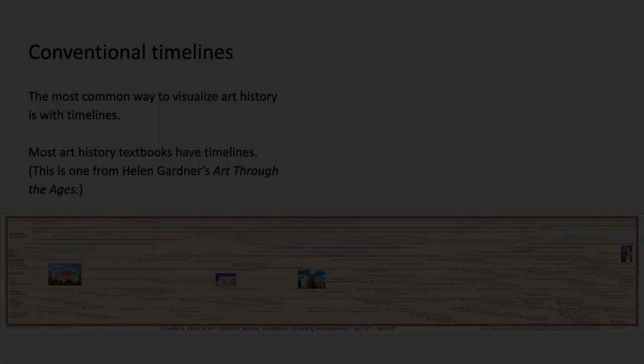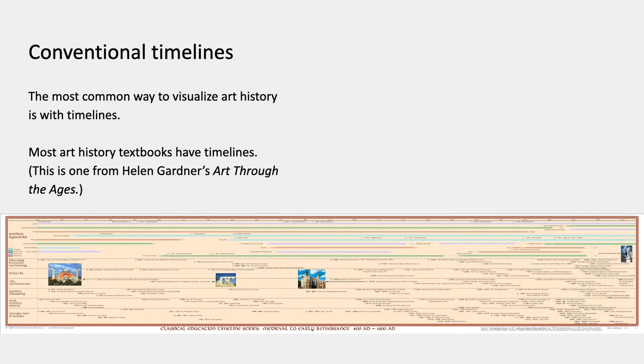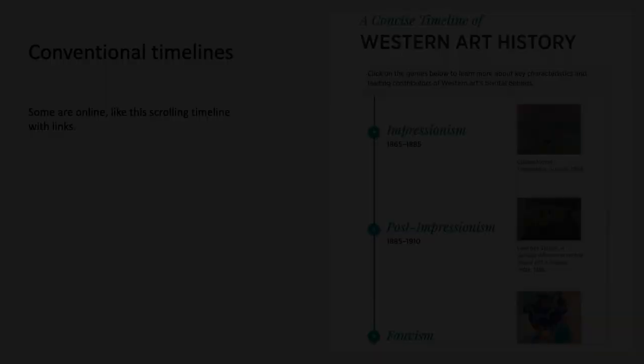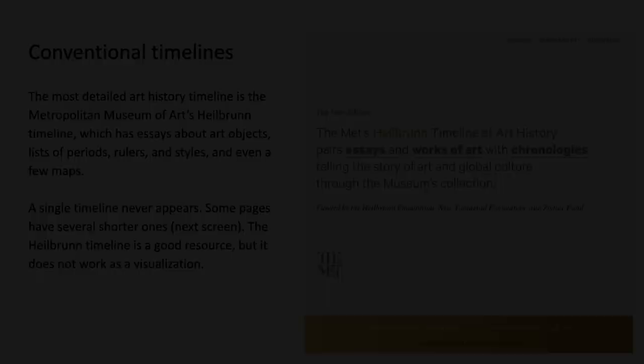So first of all, textbook timelines. The most common way to visualize art history is with timelines, and most of the big one-volume art history textbooks come with timelines — big fold-out timelines, often online scrolling ones. This is one from Helen Gardner's Art Through the Ages, and some of them are online, like this scrolling timeline with links in it.